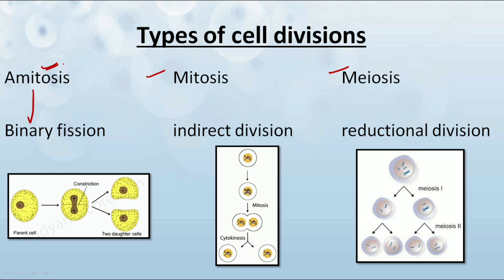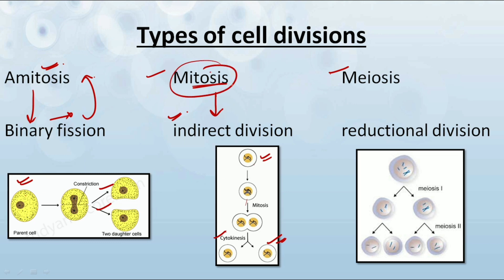The first is amitosis — binary fission is given the name of amitosis. In this method, a parental cell divides into two completely identical daughter cells; this is what binary fission is all about. The second is mitosis — mitosis means indirect division, in which the cell gets divided into two of its same copies.